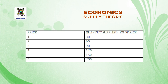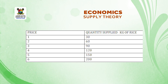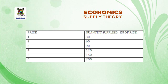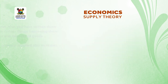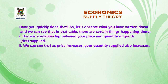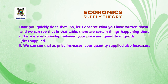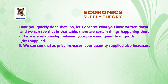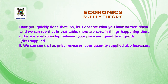In the column of quantity supplied: at price 1 it will be 30, price 2 is 60, price 3 is 90, price 4 is 120, price 5 is 150, price 6 is 200. From that table, we can observe: one, there is a relationship between price and the quantity of rice supplied; and two, as price increases, the quantity supplied also increases.